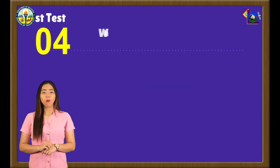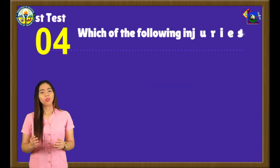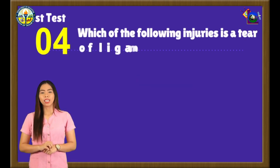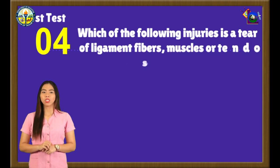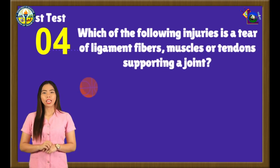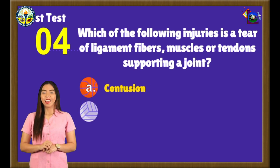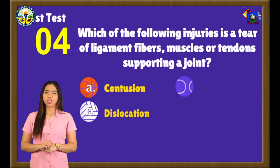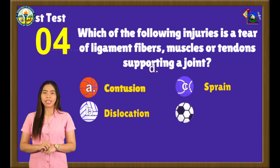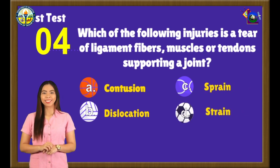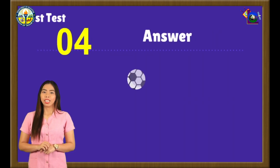Number 4. Which of the following injuries is a tear of ligament fibers, muscles, or tendons supporting a joint? A. Concussion. B. Dislocation. C. Sprain. Or D. Strain. The correct answer is letter C: Sprain.